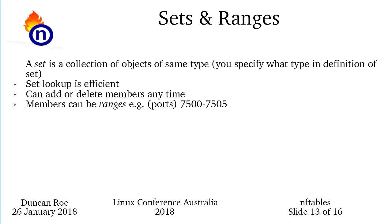Moving on to sets and ranges: sets and ranges are collections and you specify the type, which can be quite complex. It can be an IP address, or a combination of source and destination addresses, or ports, or lots of different things.